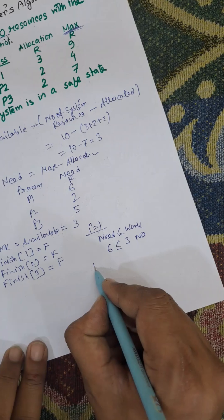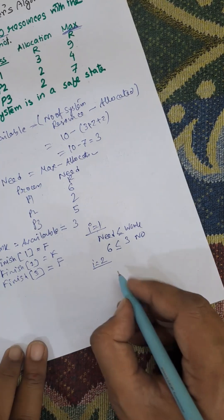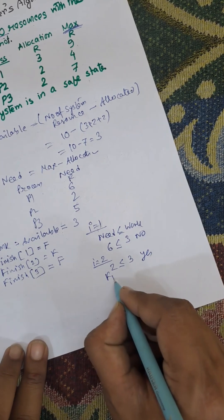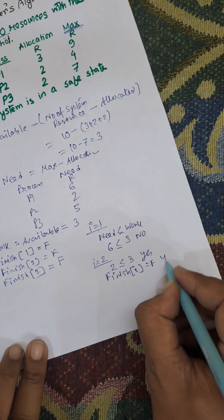Next, we will check i equals 2. Need less than or equal to work. Need is 2, less than or equal to 3. Yes. And finish is, finish 2 equals false. Yes.